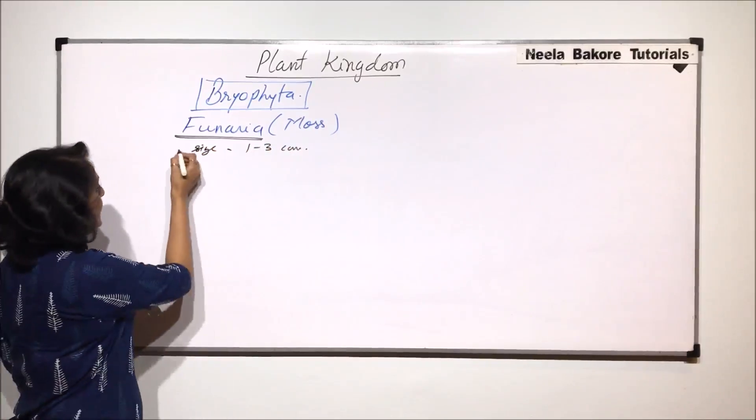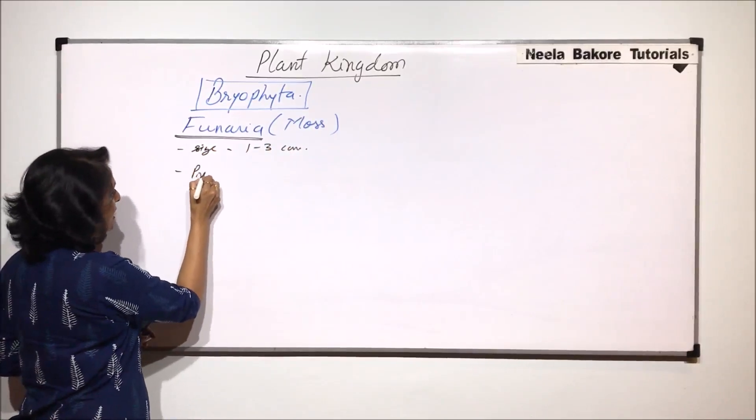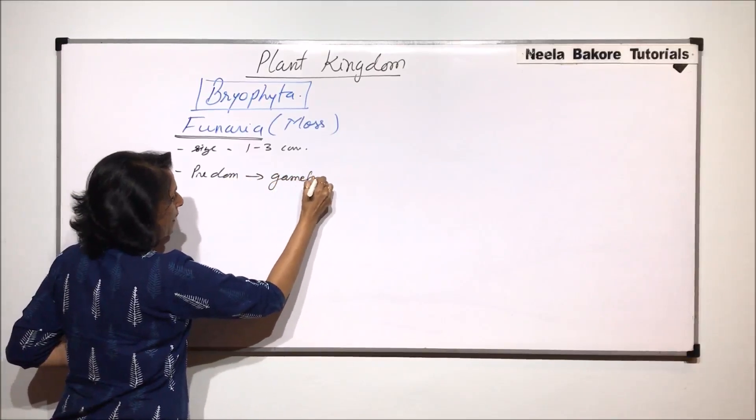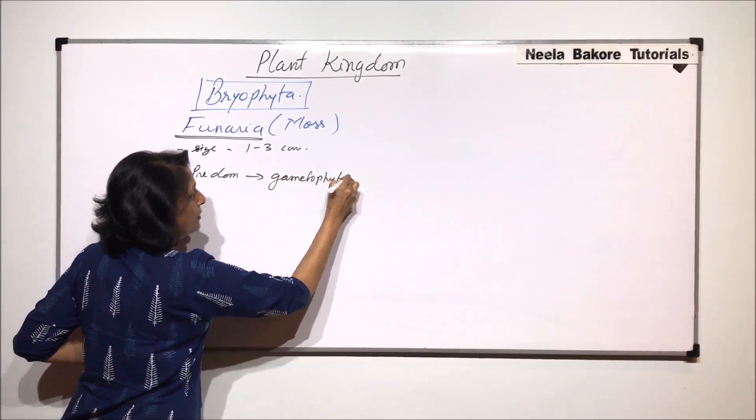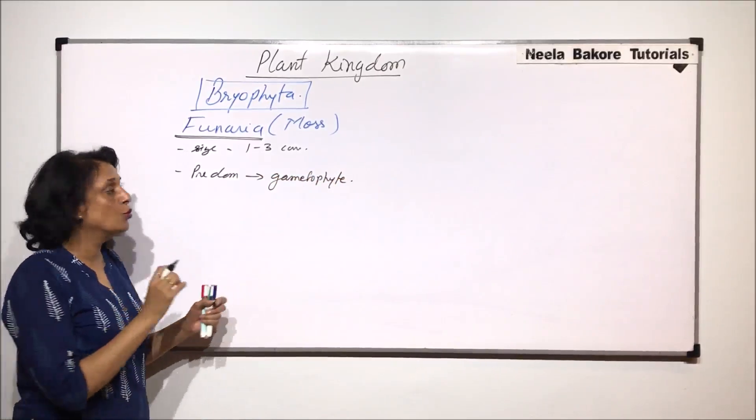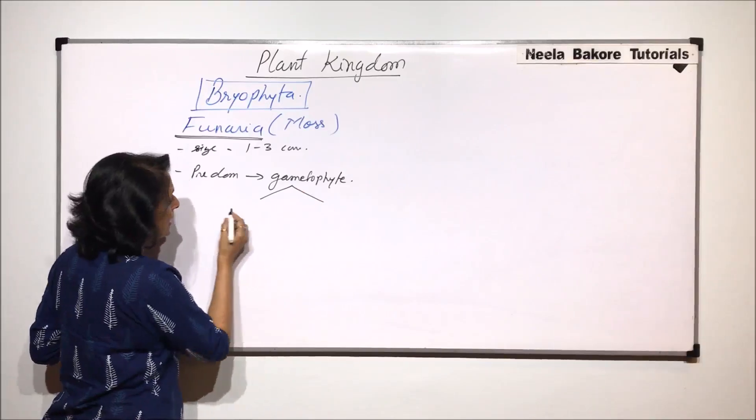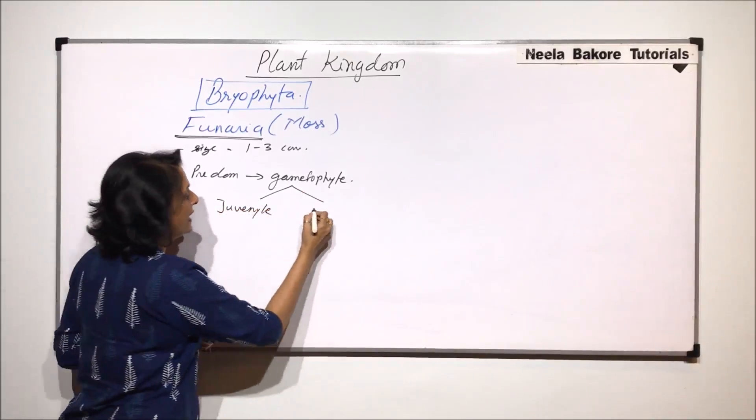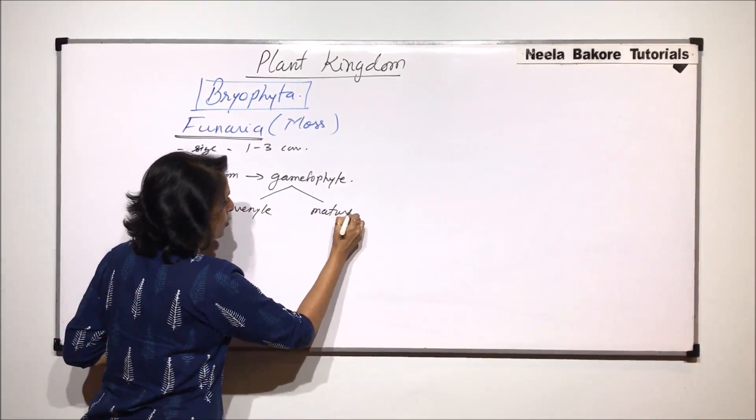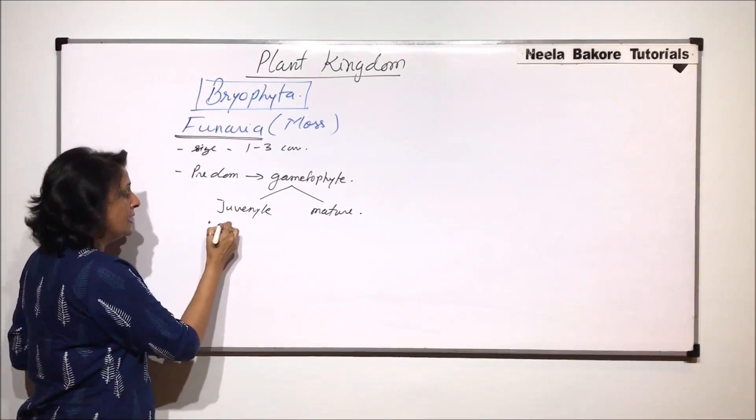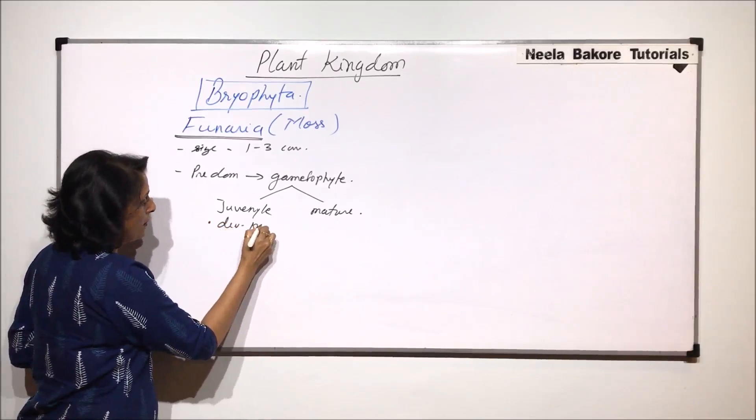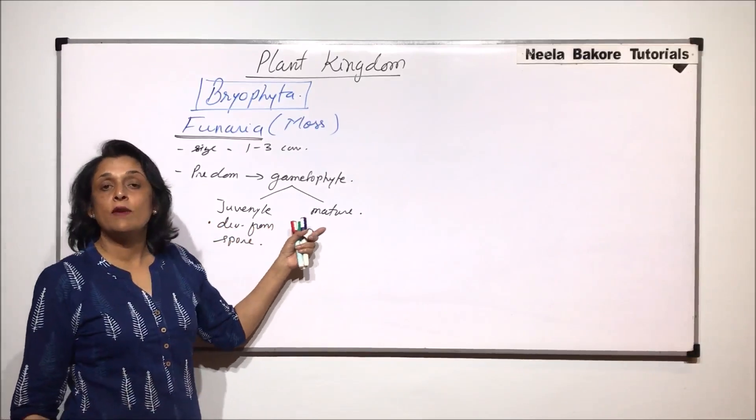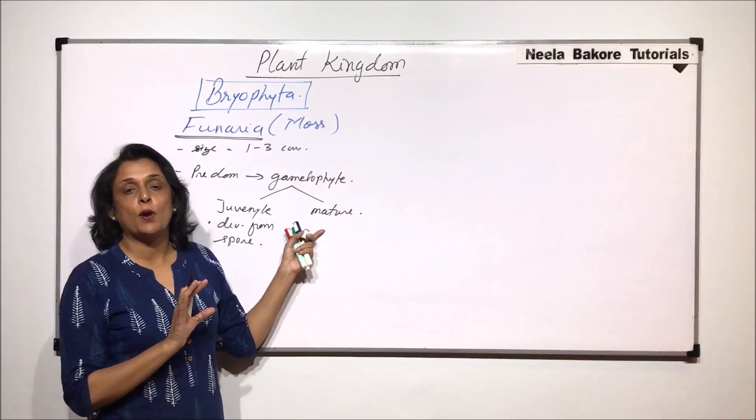The predominant stage is the gametophyte. Now this gametophyte is also seen in two stages. One is the immature or juvenile stage and the other one is the mature one. In case of juvenile it is developing from the spore and this is where we find all the structures properly developed.